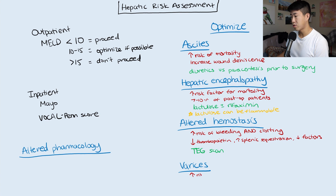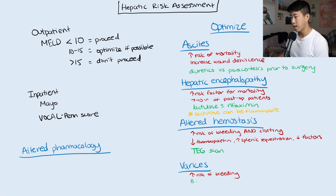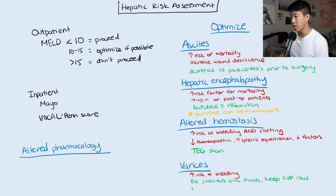Varices introduce an increased risk of significant bleeding, so we need to be very careful. Recommend to the surgical team to be judicious with fluids in the OR — avoid giving too many fluids and avoid elevating central venous pressure. If it's a long time out from surgery, consider initiating a beta blocker to decrease the risk of variceal bleeding.